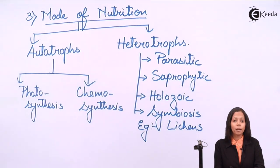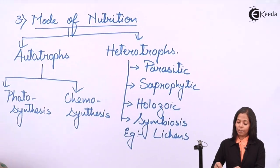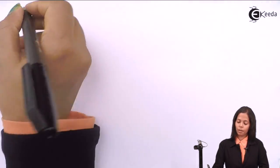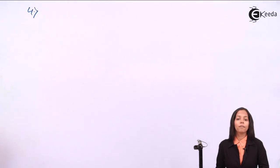Lichens are made up of algae and fungi. Algae prepare food for fungi and fungi give body support to algae. So this is mode of nutrition.